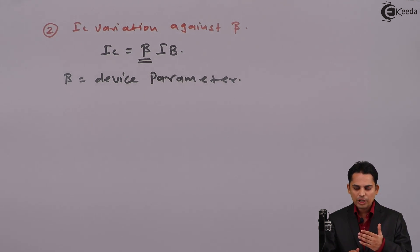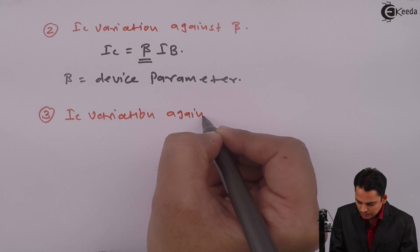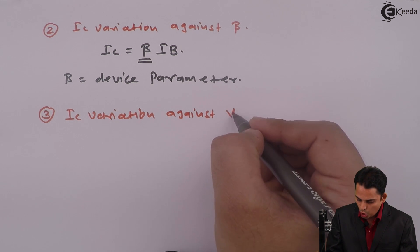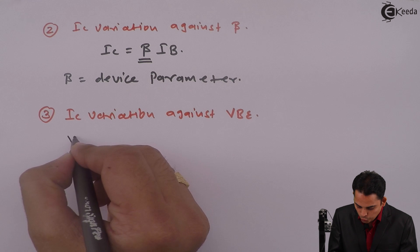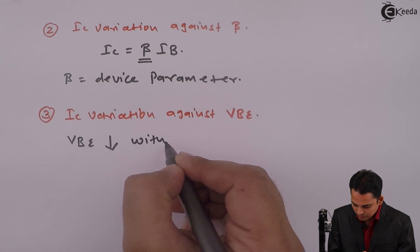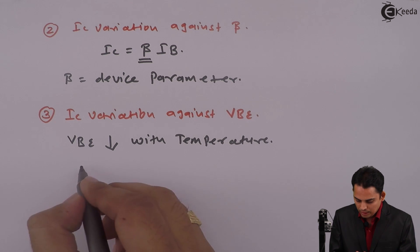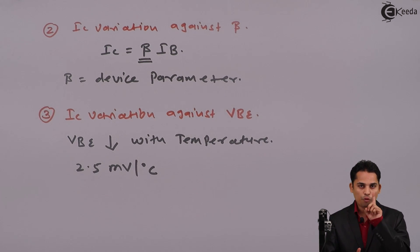And the third point is IC variation against cut-in voltage or VBE. Now, cut-in voltage decreases, that means VBE decreases with temperature, by 2.5 millivolts per degree Celsius. For every change of 1 degree Celsius, the cut-in voltage decreases by 2.5 millivolts.